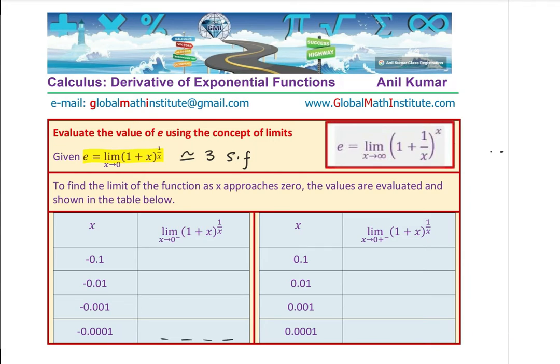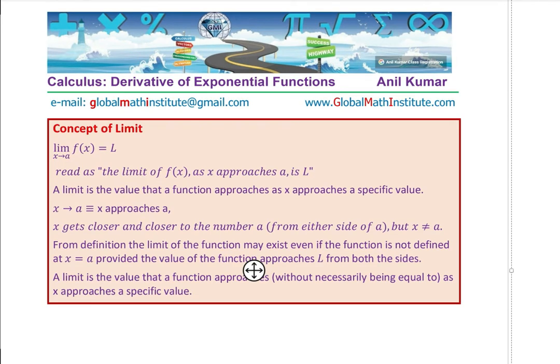Similarly, we will approach from the right hand side. We will compare the values to three significant figures. Here, we are approaching, that means, we are decreasing the values towards 0 from 0.1, 0.01, 0.001 to 0.0001, right? So, use calculator, fill this table and observe. I did the same thing. I used the calculator and filled this table.